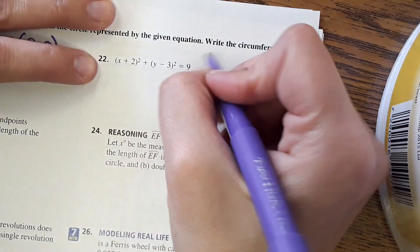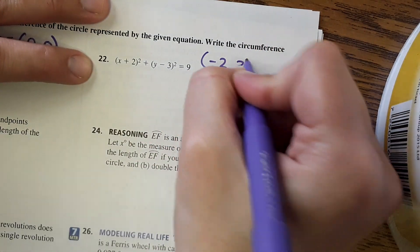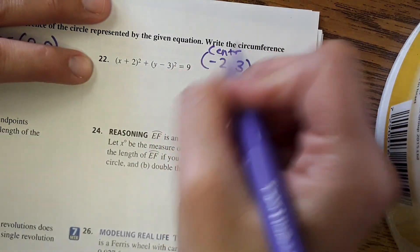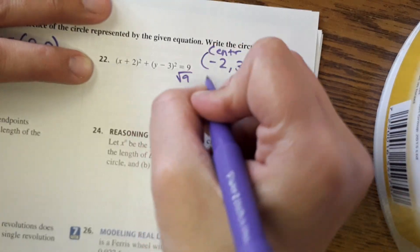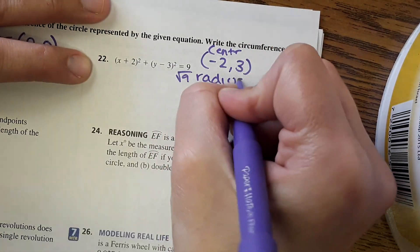Okay, then for number 22, the center here would be at negative 2, 3. And take the square root of 9, you get a radius of 3.